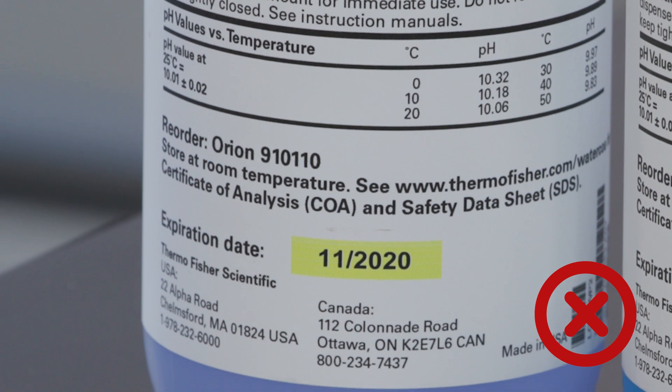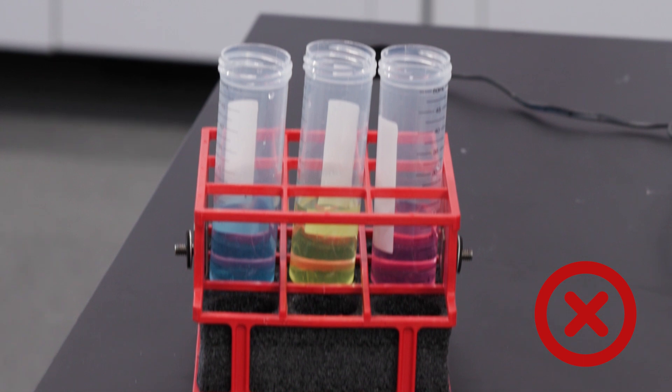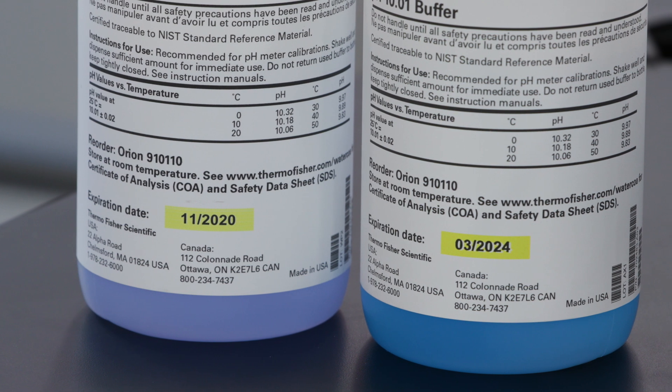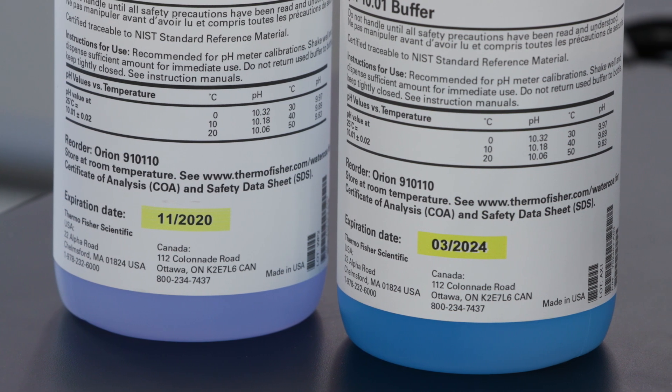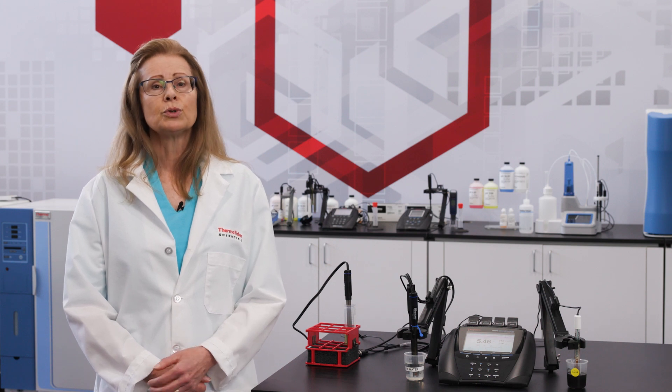Reused buffers, expired buffers, or improperly stored buffers can become contaminated, evaporate, pick up gases and particles from the air, even grow mold and bacteria. These conditions accelerate the aging of the buffer and change its properties. When this happens, the buffers will no longer have the certified value we expect and the calibration will be invalid.